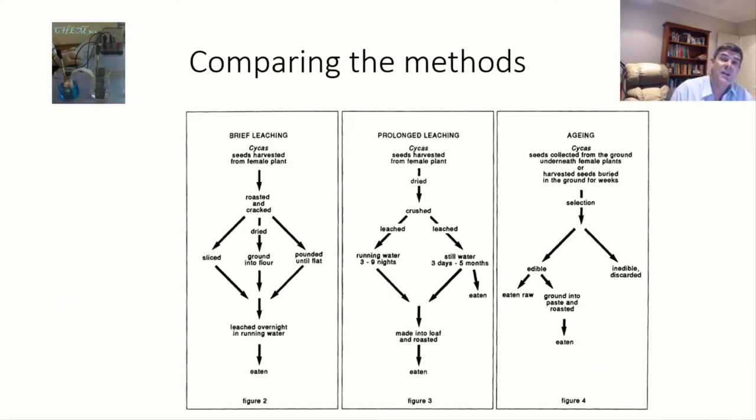So the first method is the brief leaching. Firstly, the cycad from this genus, cycas, seeds are harvested. What happens to them is they are then heated up and cracked, which allows the inside to be exposed. The inside of each of these seeds can then be effectively sliced, dried, and ground or pounded.